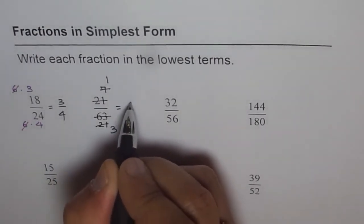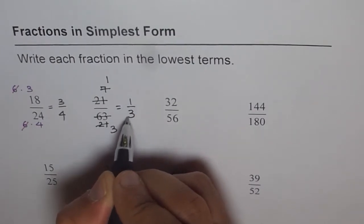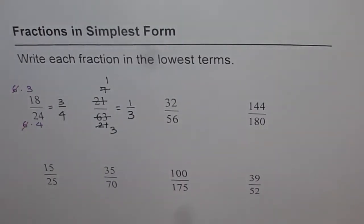And 21 divided by 7 is 3. And therefore, we can write this as 1 over 3. So we have simplified 21 over 63 as 1 over 3.